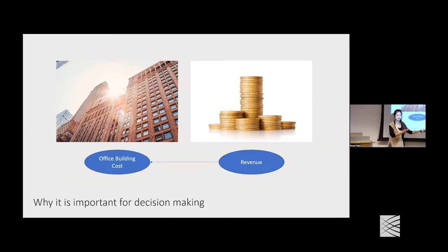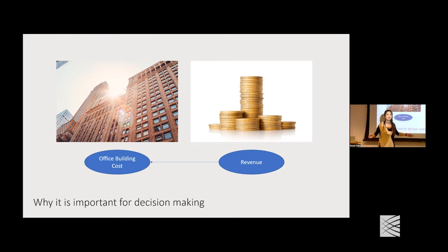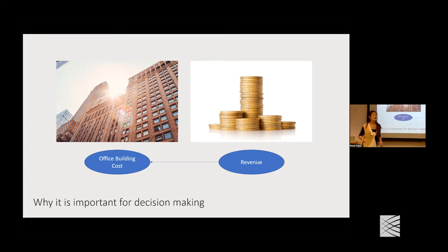If we don't care about causation and just abuse a correlation-based machine learning system, problems arise. For instance, office building size might be highly correlated with revenue. A naive system might recommend spending more on the office building to grow revenue — which would be completely wrong. We need to care about causal decision-making to make optimized decisions.